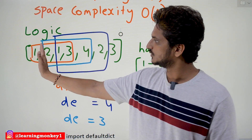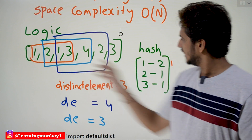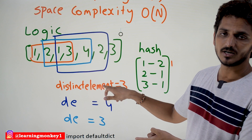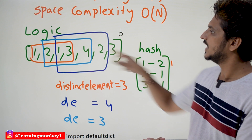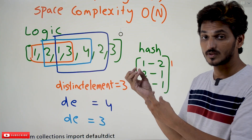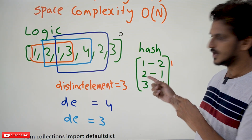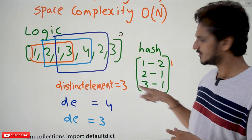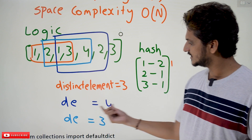The first step: whatever element you eliminated from the old window, make changes in the hash table — 1 is now 1 time — and make changes in the distinct element count if needed. In this example, we are not changing the distinct element count because it is a duplicate element. Now, the new element we added is 4. Is 4 present in this hash table? No. So increment the distinct element count, add 4 with count equal to 1. The next window's distinct element count is 4.